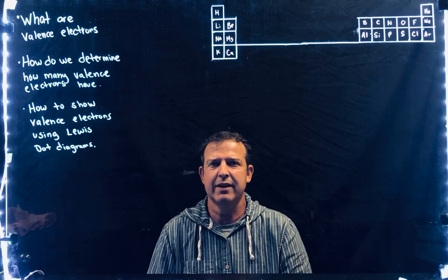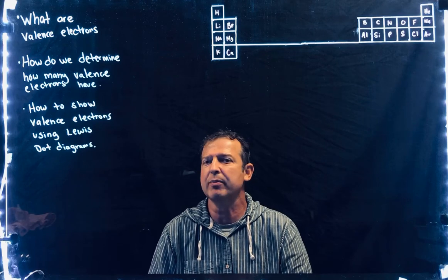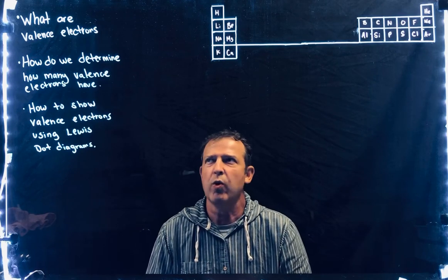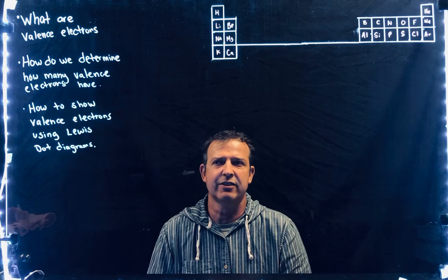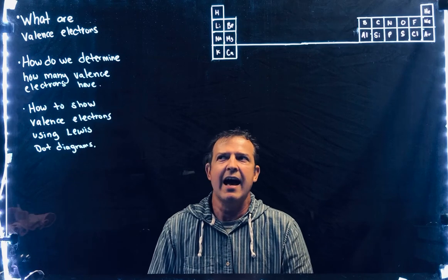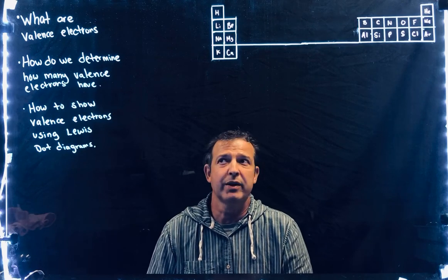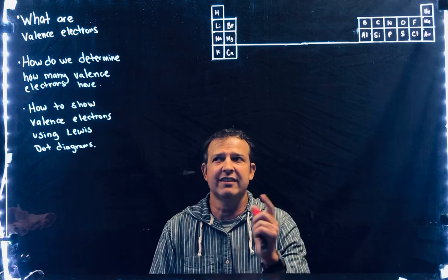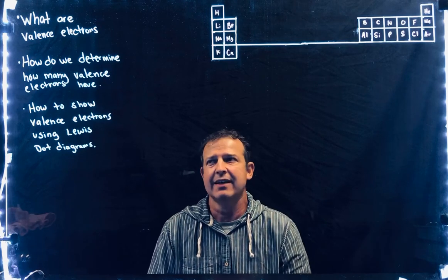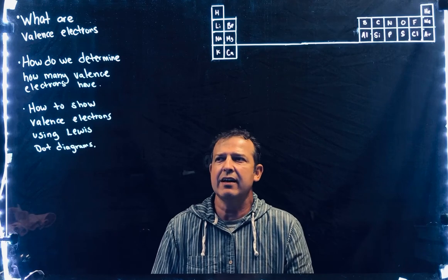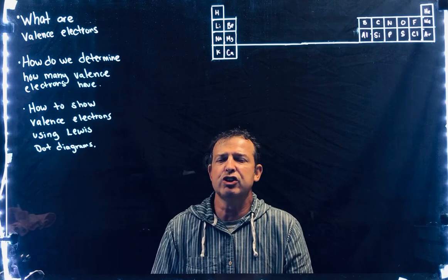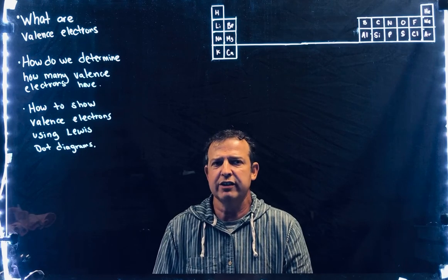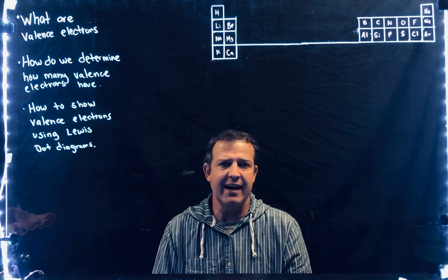Hello, this is Mr. McDermott, and today we're going to be answering three things: what are valence electrons, how do we determine how many valence electrons an atom has, and then we're going to show valence electrons using the Lewis dot diagrams.